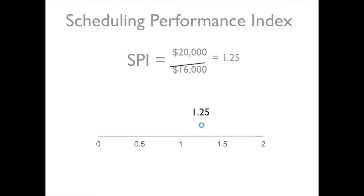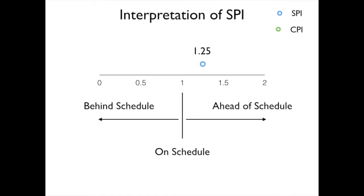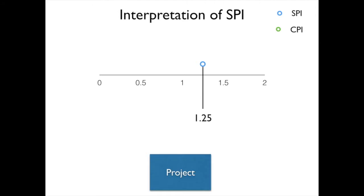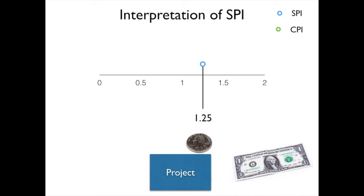$1.25 on our scale tells us that we are, in fact, ahead of schedule. Or, another way to look at this, is that for every dollar that we put into our project, in terms of scheduling value, we are getting $1.25 out.